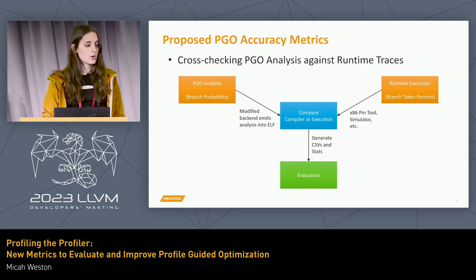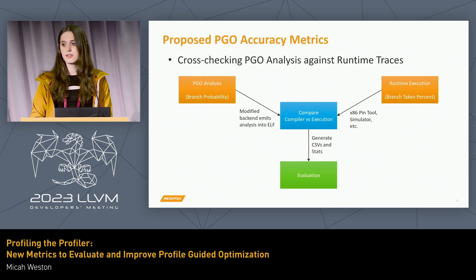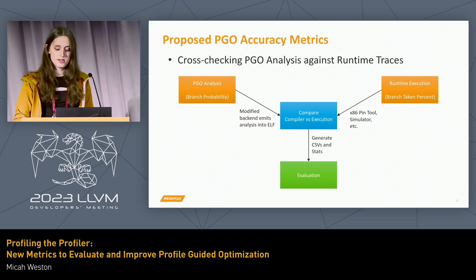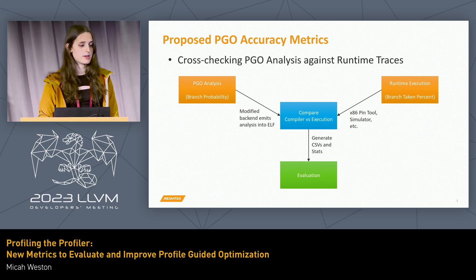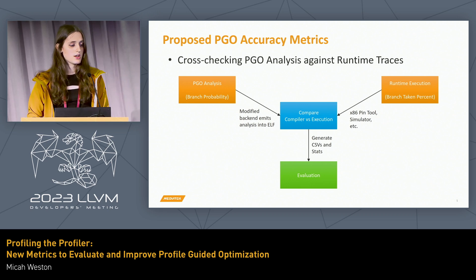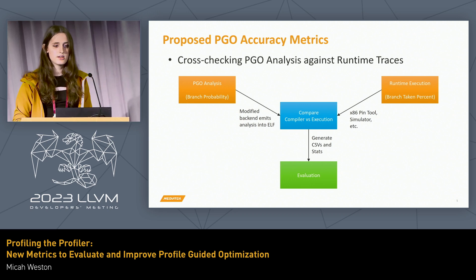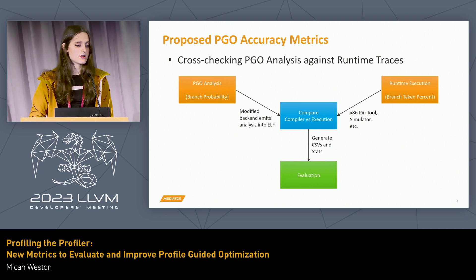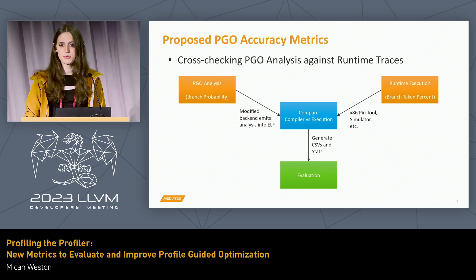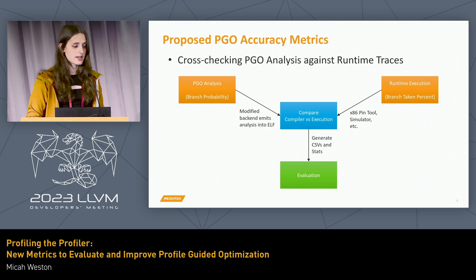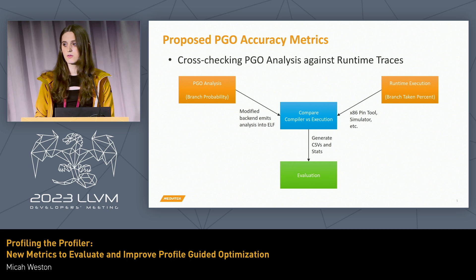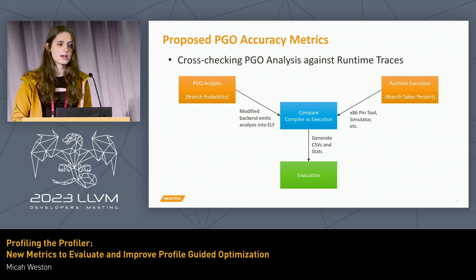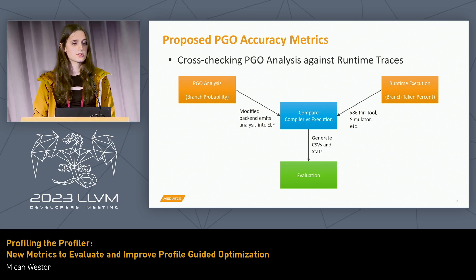Can we do better? What we're proposing is cross-checking the PGO analysis passes against runtime information at the end of compilation. To do this, we've modified the backend to emit these analyses into the ELF. So far, we've only focused on branch probabilities, but there are also block weights and other things that could be encoded there. We also need to get some sort of runtime trace that's accurate for that comparison. We've been able to use Pintool on x86 to collect things, but it's also possible to use an emulator, simulator, or other sorts of tracing tools.